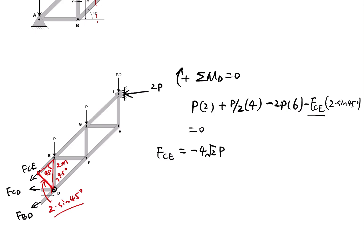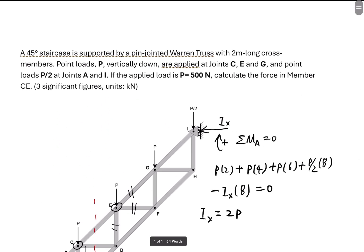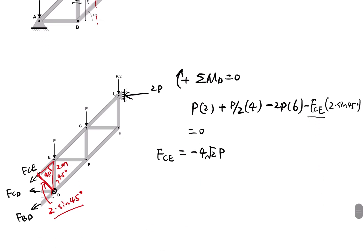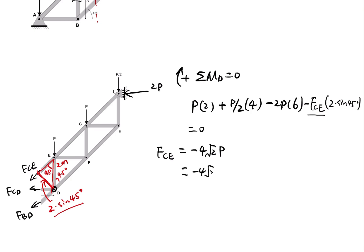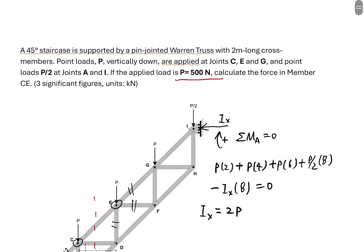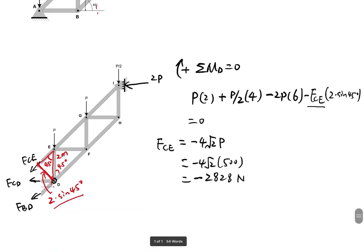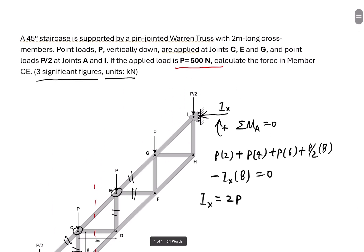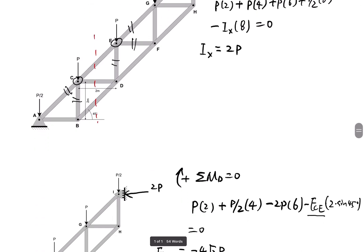In this question, P = 500 N. Substituting: FCE = −4√2 × 500 ≈ −2800 N. Since the answer is required in kilonewtons to three significant figures, the final result is FCE = −2.83 kN. This is the member force in CE.